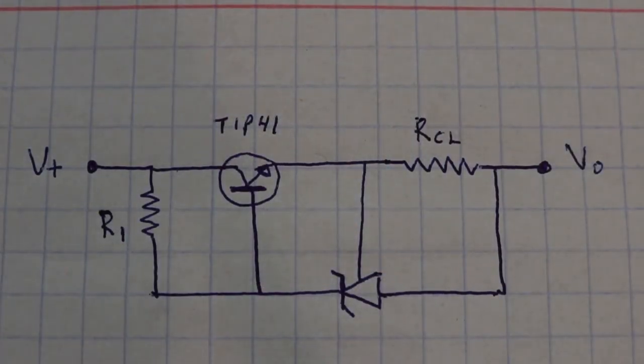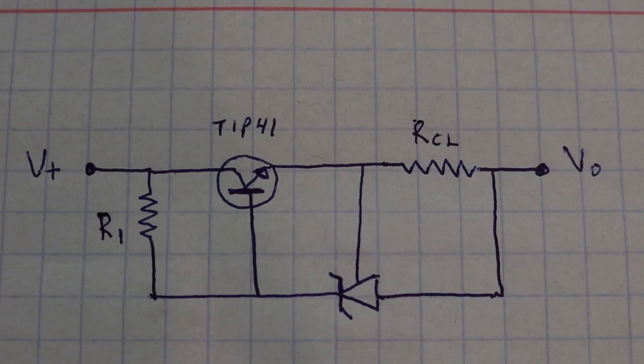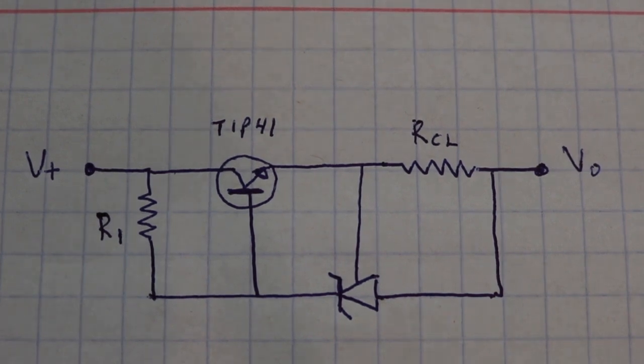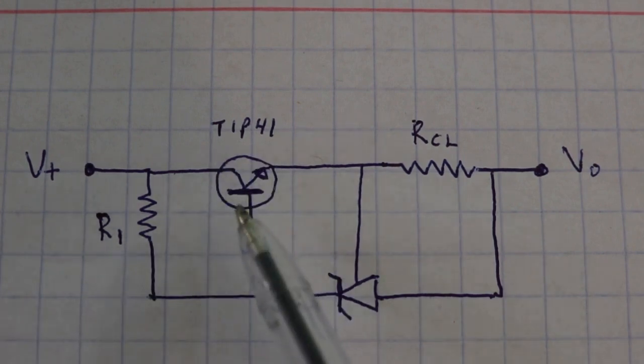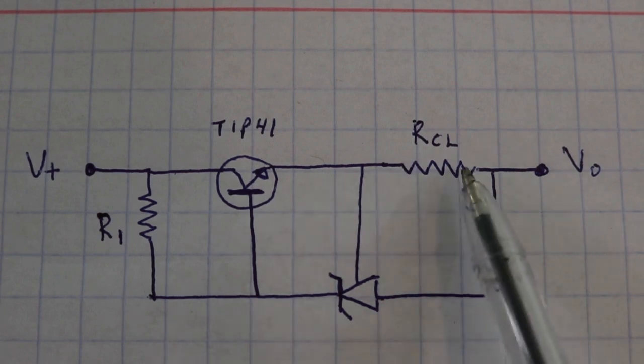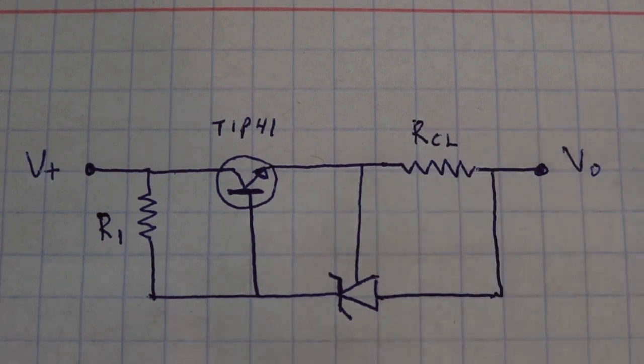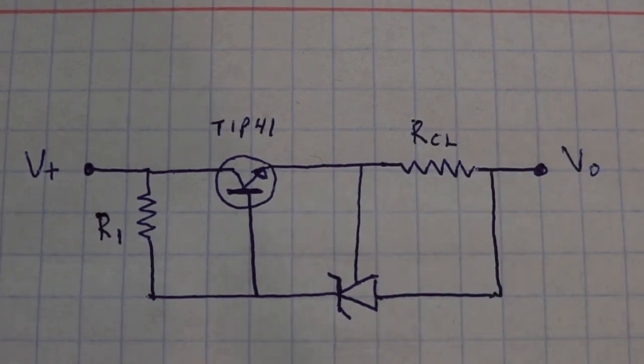Here we have the schematic for the constant current circuit. We need, besides the TL431, a resistor, a power transistor, I am using a TIP41, and another resistor here. This must be a power resistor since all the current will go through it.